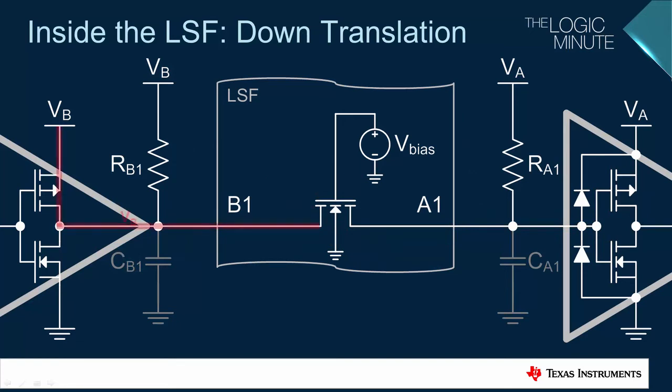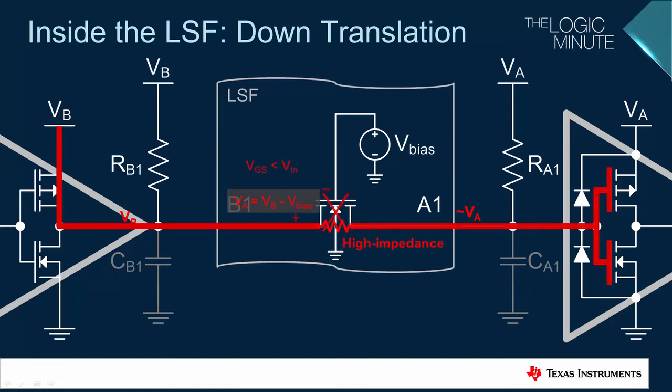When the transmitter drives the line high, the output voltage will follow the input until the FET turns off, which happens at approximately VA in this case. Once the FET turns off, the output goes into a high impedance state. The voltage at A1 will remain at approximately VA due to the parasitic capacitance CA1. The capacitor's voltage can't change instantaneously.